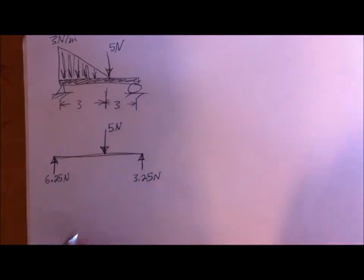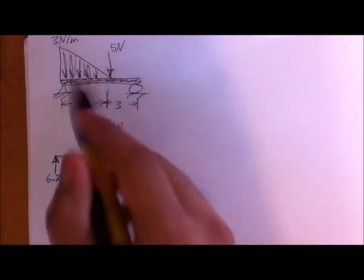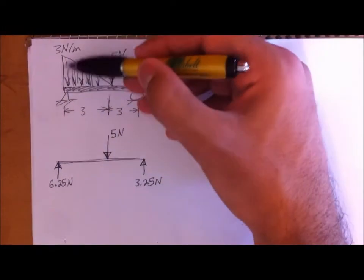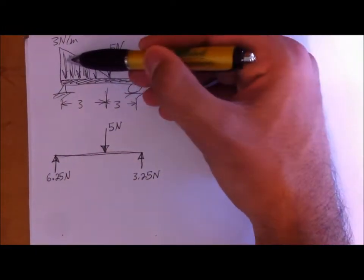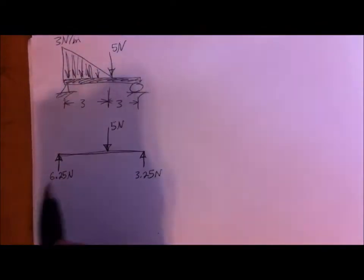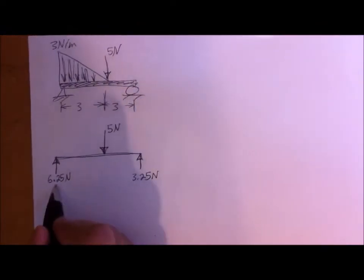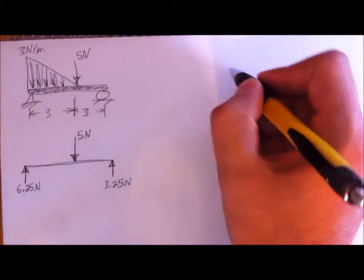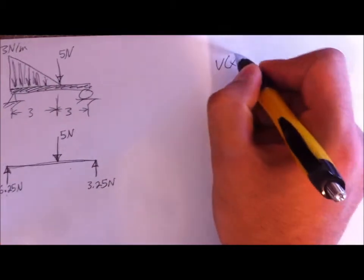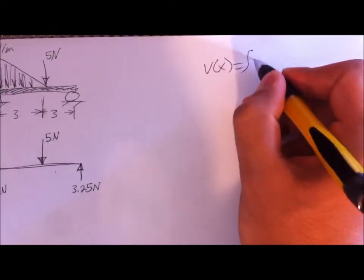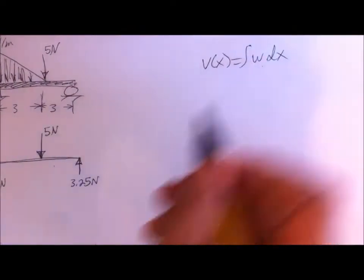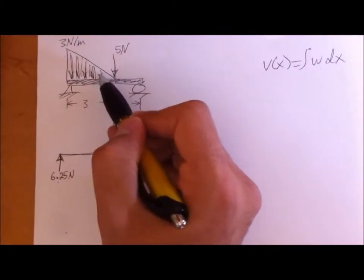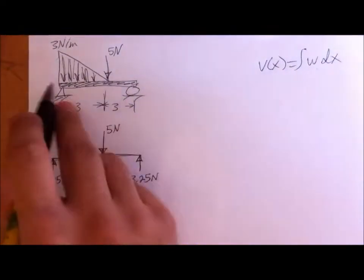Before you draw the shear diagram, you need to locate pretty much all your external forces and reaction forces. In this case, we don't include the resulting force for this distributed force right here. Now we can look into how to draw the shear diagram — V, as in the shear, equals the integral of W dx. W is pretty much the area of the distributed force right here.